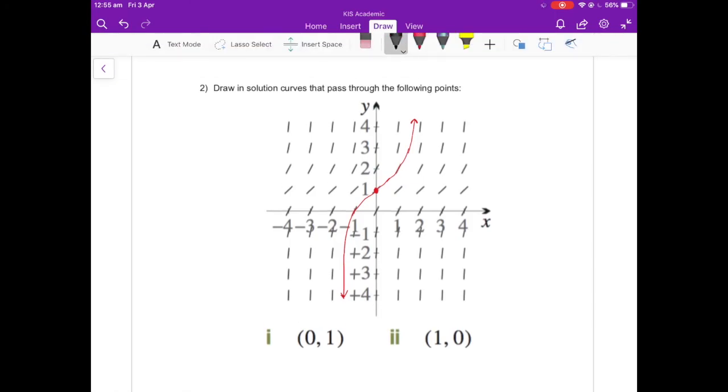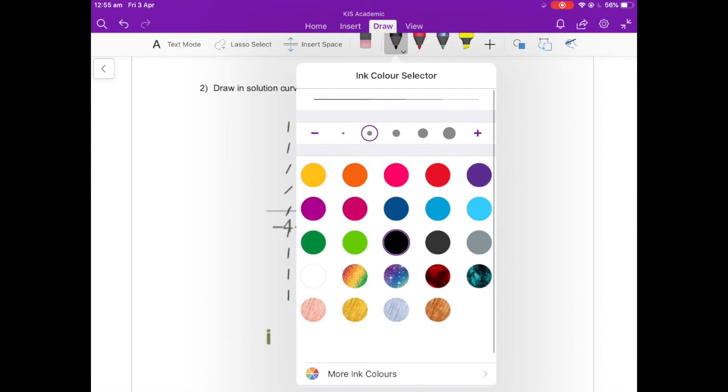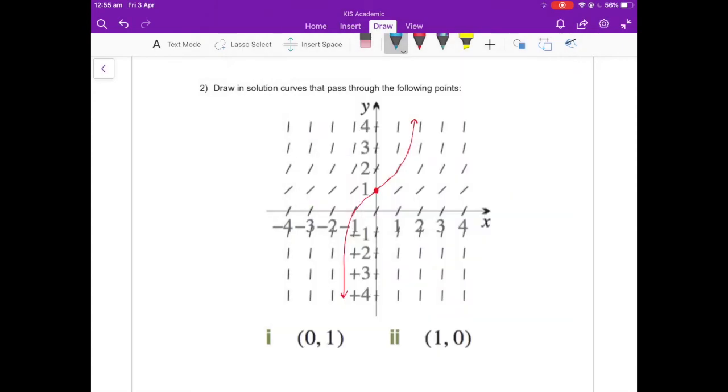And I'm going to draw the same thing but through (1,0). So 1, 0 is this point here. So upwards, I know it kind of goes like this, and then same downwards. And those two are my solution curves and they don't cross each other. Those will be the answers.